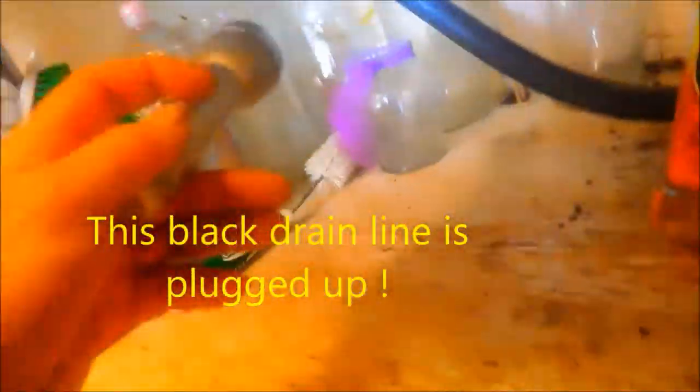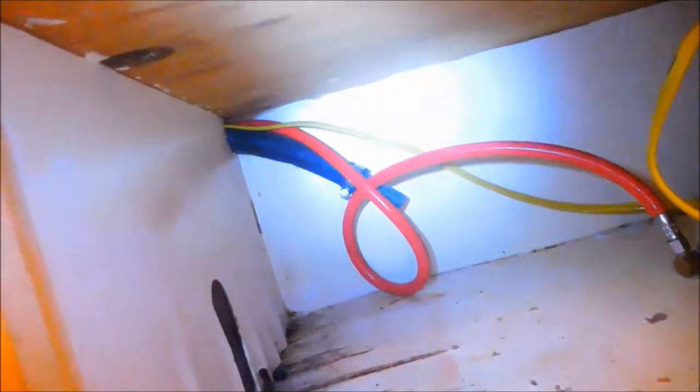Now the black line is plugged up. Yeah, it's plugged up with grease. The reason I know is because I blew inside of it and it wouldn't blow through, so I'll need to take a coat hanger or something and flush that line.